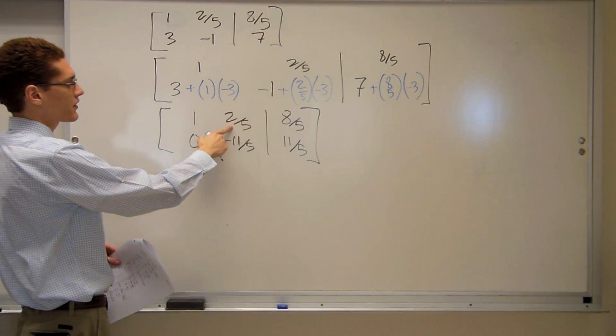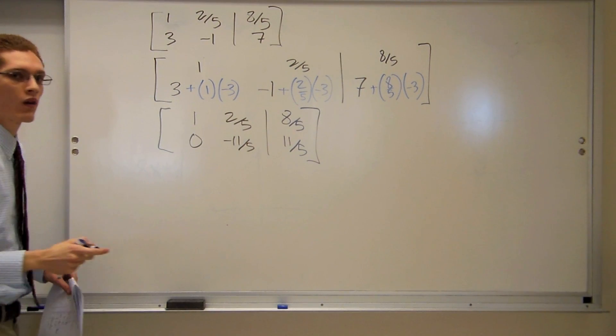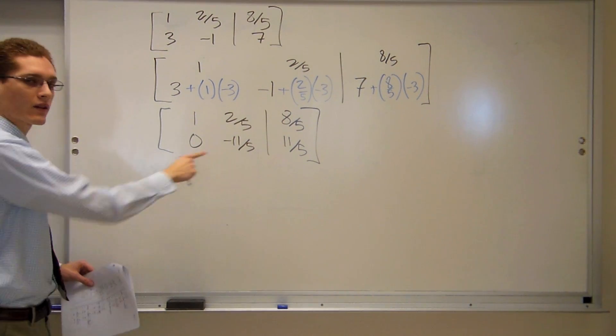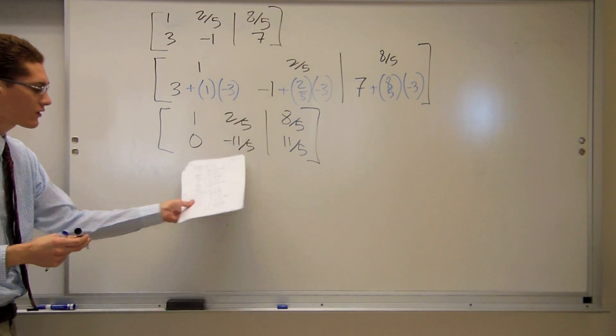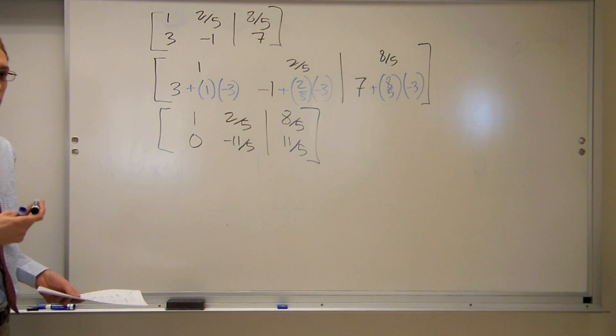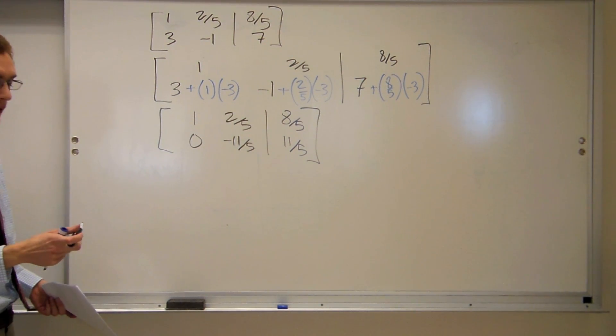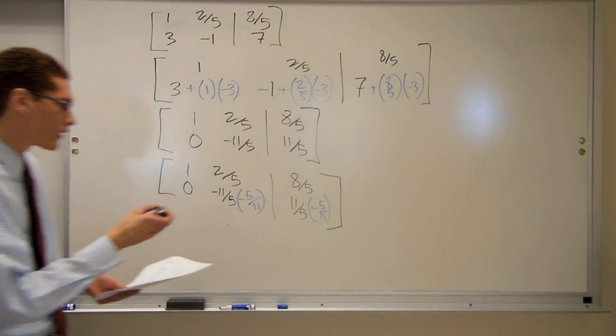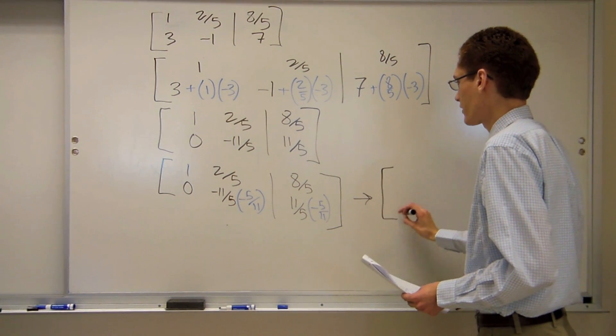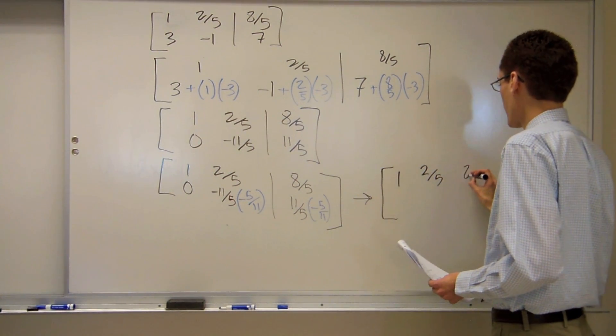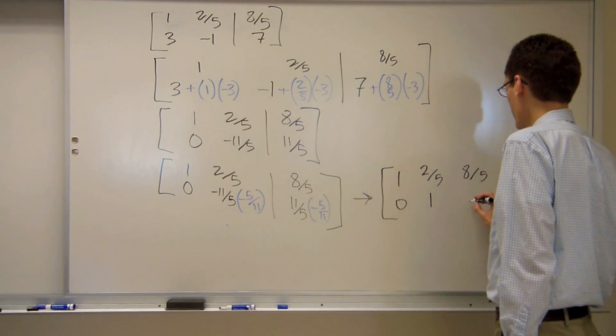Now we still need that 2 fifths to be a 0 and that negative 11 fifths to be a 1. I'll start with the negative 11 fifths. To cancel out the negative 11 fifths and make it positive 1, I'll multiply by negative 5 11ths. So that's going to be the matrix 1, 2 fifths, 8 fifths, 0, 1, negative 1.